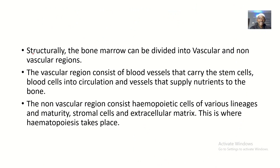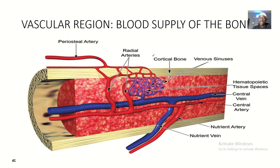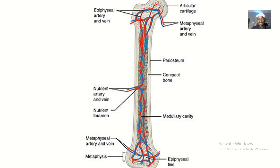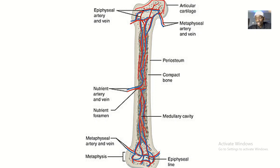Structurally, the bone marrow can be divided into the vascular and the non-vascular region. The vascular region is basically the region that has blood cells. There are some sites that don't really have direct blood supply, like the epiphysis — these are the non-vascular regions. These are the regions that have hematopoietic stem cells, where the process of hematopoiesis occurs, so they don't really need direct connection to the blood vessels.